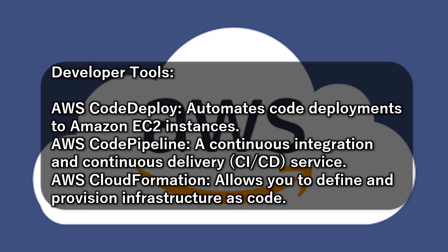AWS CodeDeploy automates code deployments to Amazon EC2 instances. AWS CodePipeline is a continuous integration and continuous delivery (CI/CD) service. AWS CloudFormation allows you to define and provision infrastructure as code.